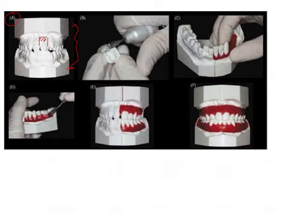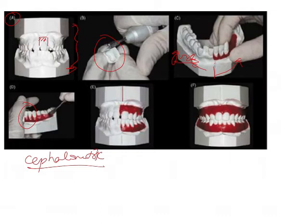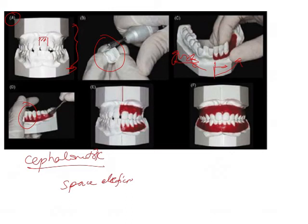The lower model is addressed first. Using Tweed's analysis, the corrected position of the lower incisors is identified from cephalometric analysis. One side of the lower arch is sectioned individually, while the other side is kept as a guide. The lower incisors are then repositioned in wax according to the corrected position. If there is a space deficiency during repositioning, it indicates that extraction may be needed.